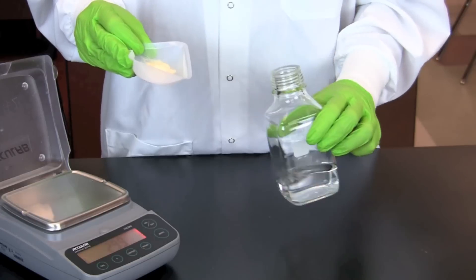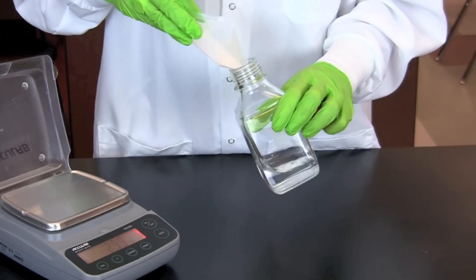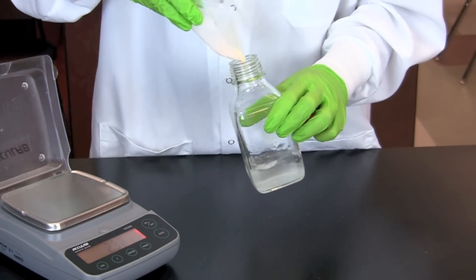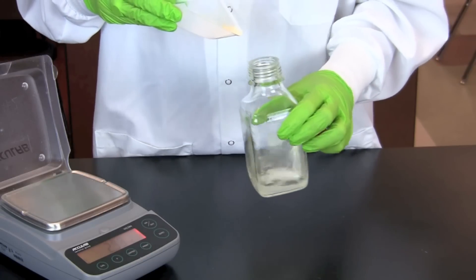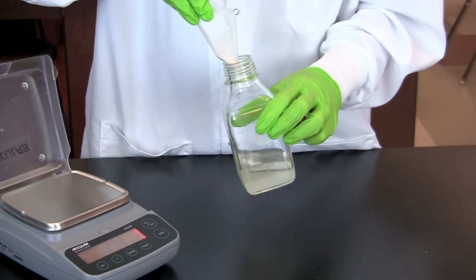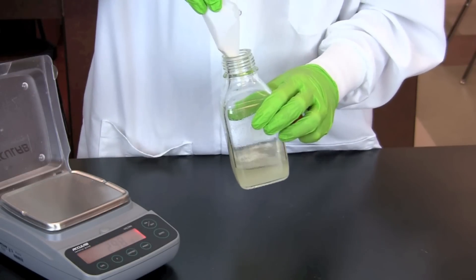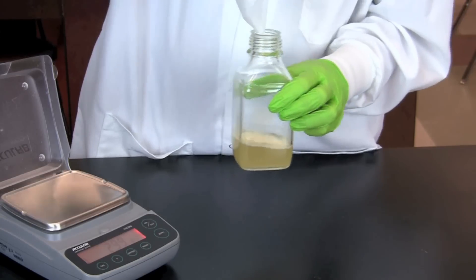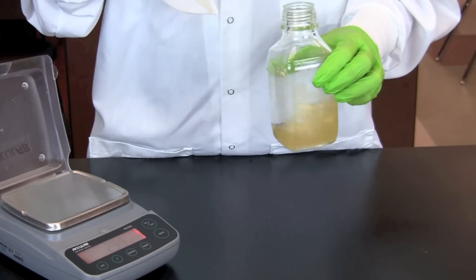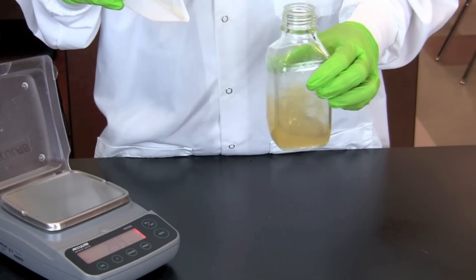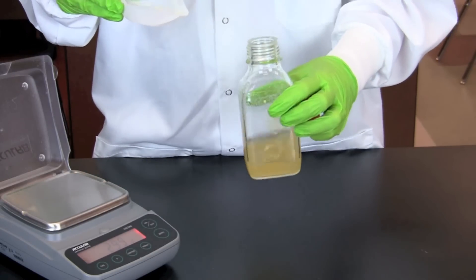The LB agar powder is then added to 100 milliliters of purified water pre-measured in a reagent bottle. The powder is added slowly while constantly swirling the bottle. Swirl until no clumps are present. When finished adding the agar powder, the solution will appear cloudy since the powder is not completely dissolved.